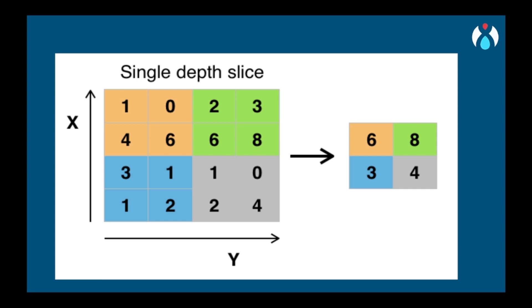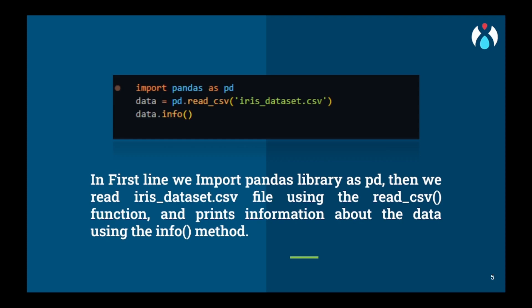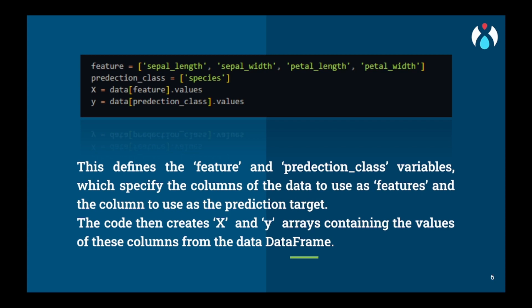Moving to the practical part. As always, we will import the Pandas library, use read_csv to read the CSV file, and get data information using data.info, where we will get all information related to data types, null values, and memory usage. We will then split the data into features and prediction class — features are what the user gives as input, and the prediction class is what the model outputs — defined as X and Y.